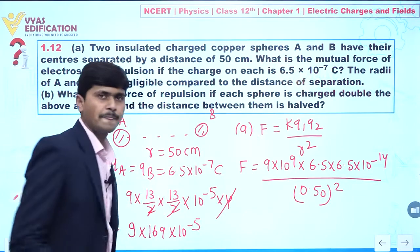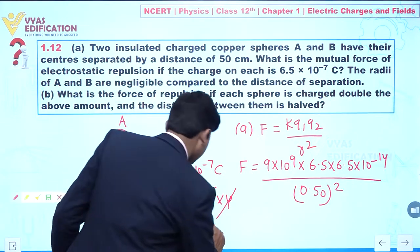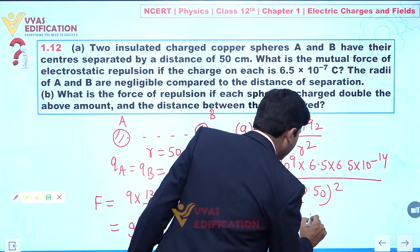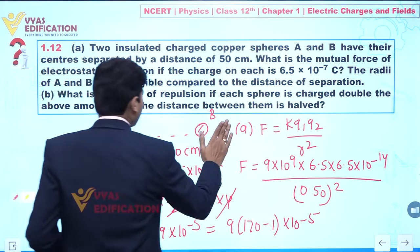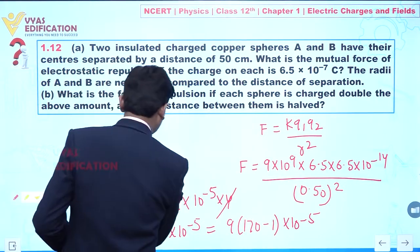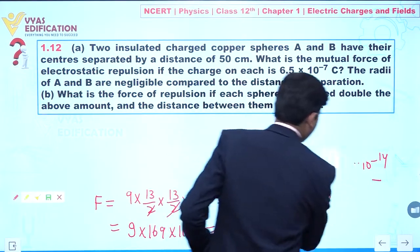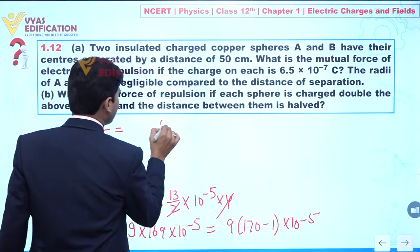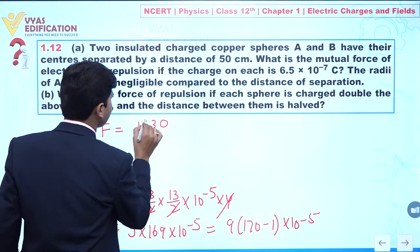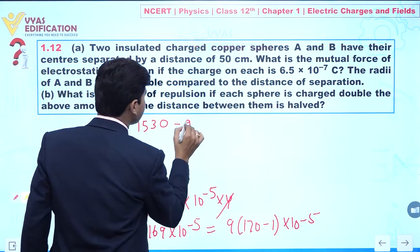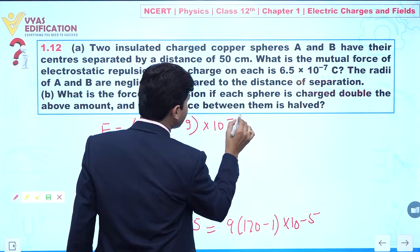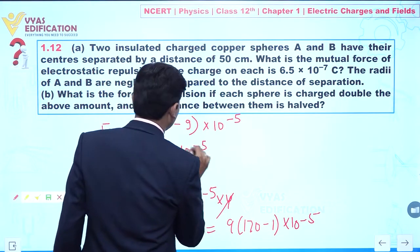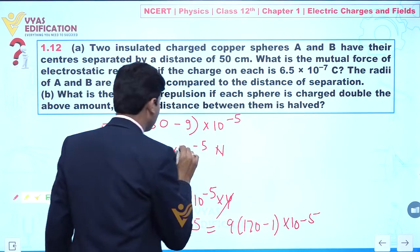From here we get 9 × 169 × 10⁻⁵. We can write 169 as (170 − 1), so this becomes 9 × 170 − 9, which gives 1530 − 9 = 1521. Therefore F = 1521 × 10⁻⁵ newtons.